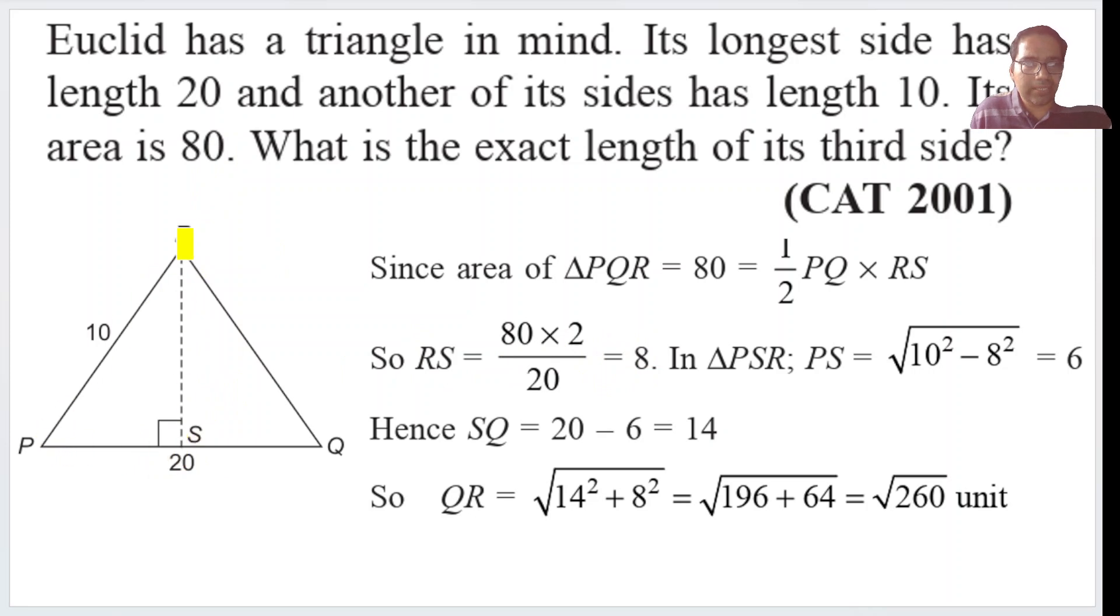Now PRS, this is a right angle triangle. So RS we know. What is PS? Square root of 10 squared minus RS squared. 10 squared minus 8 squared, the square root of that is equal to 6. That is PS is equal to 6.